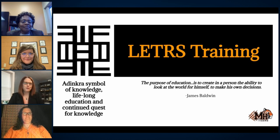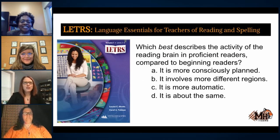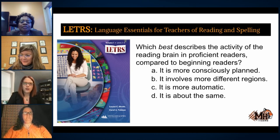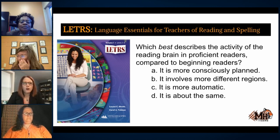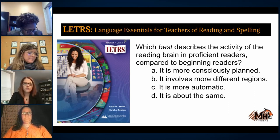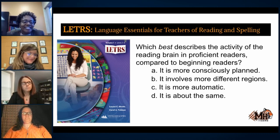I have a little bit of a task for you to complete. Think about what best describes the activity of the reading brain in proficient readers compared to beginning readers. Is it A, that it's more consciously planned? Is it B, that it involves more different regions? Is it C, that it's more automatic? Or is it D, that it's about the same? Think of your answer.